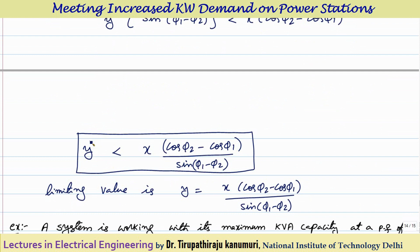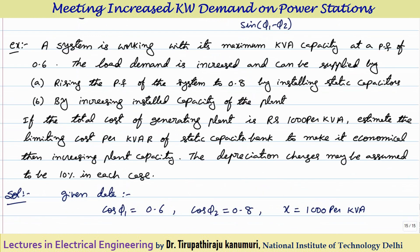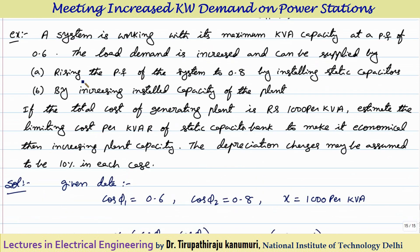So the cost per KVAR of power factor improvement equipment, Y, should always be less than X × (cos phi 2 − cos phi 1) / sin(phi 1 − phi 2) for it to be economical. The limiting factor occurs when Y equals this value — meaning whether you expand the power plant or install power factor improvement equipment, there is no economic difference. Let us take an example to understand this concept.